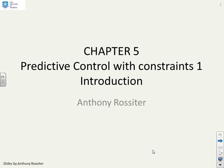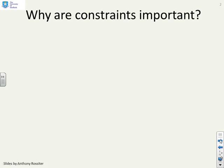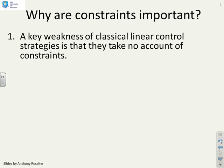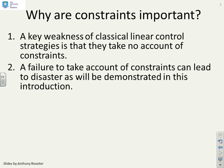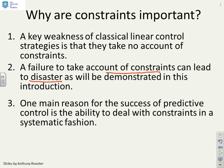This is the first video on predictive control with constraints. Why are constraints important? A key weakness of classical linear control strategies is that they do not take account of constraints. The problem is that a failure to take account of constraints can lead to disaster, and we're going to demonstrate that with a few simple examples in this introduction.